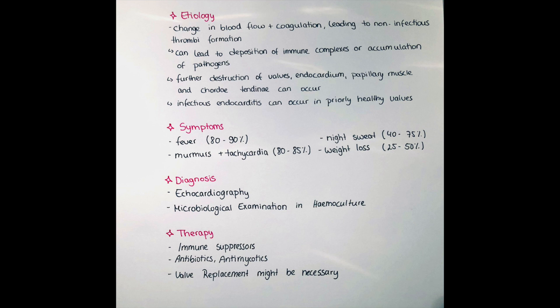Diagnosis is done primarily by echocardiography — observation of the heart under ultrasound — where blood flow obstructions or turbulence can be seen. A microbiological examination via hemoculture is also done to see if the culture is positive or negative. It should be remembered that fastidious bacteria may take longer to be cultured, so it is advisable to keep the hemoculture running a little longer than usual.